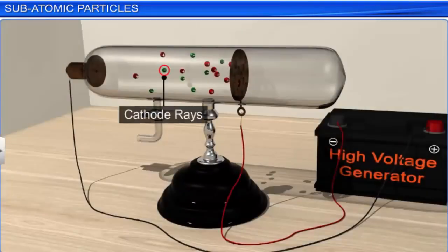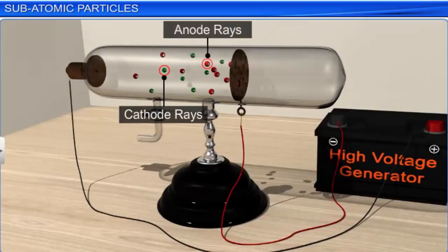The mass of the electron (Mₑ) was then determined by combining the results of Millikan's oil drop experiment and Thomson's value of the e/m ratio, and was found to be 9.1094 × 10⁻³¹ kg. Just like the discovery of cathode rays led to the discovery of negatively charged particles called electrons, the discovery of anode rays led to the discovery of positively charged particles called protons.